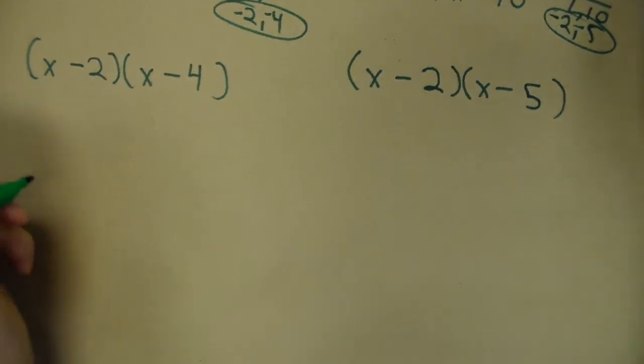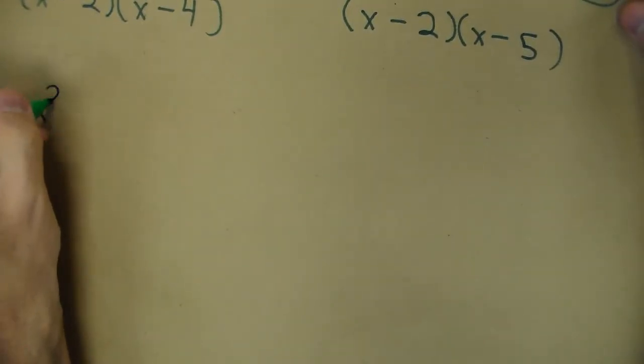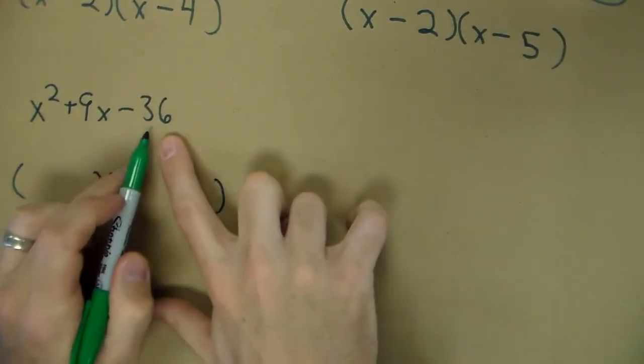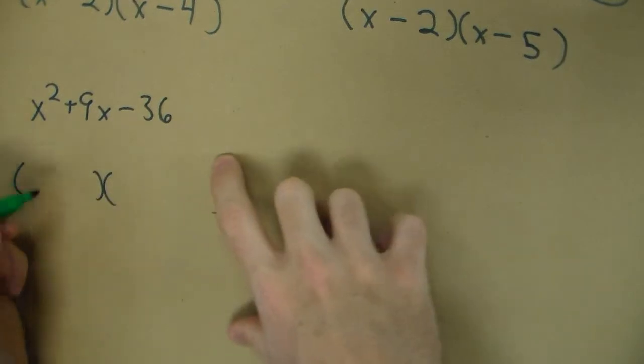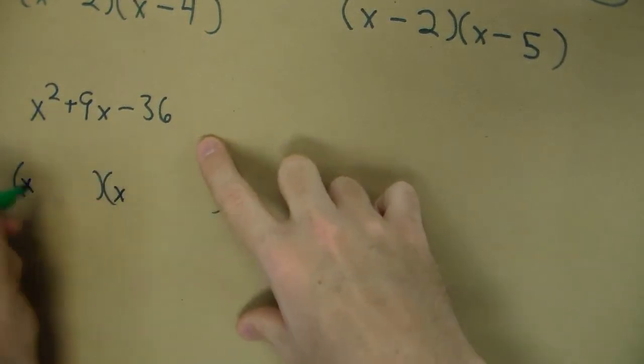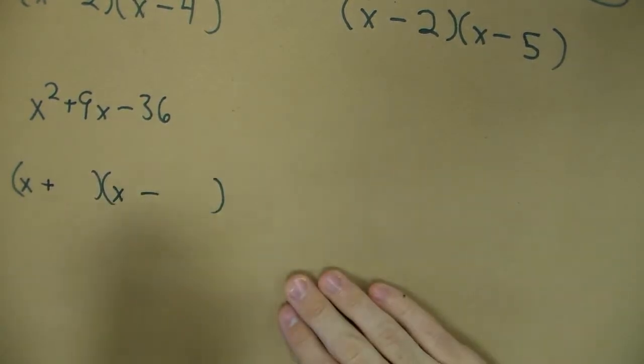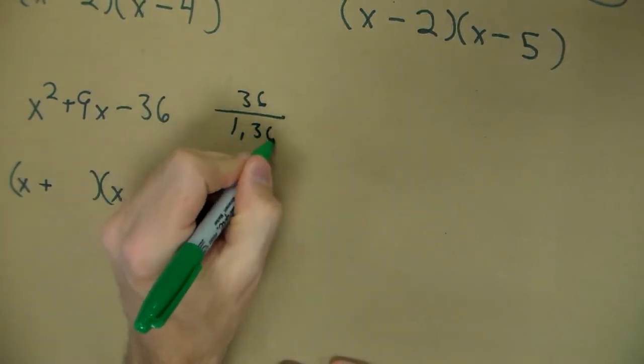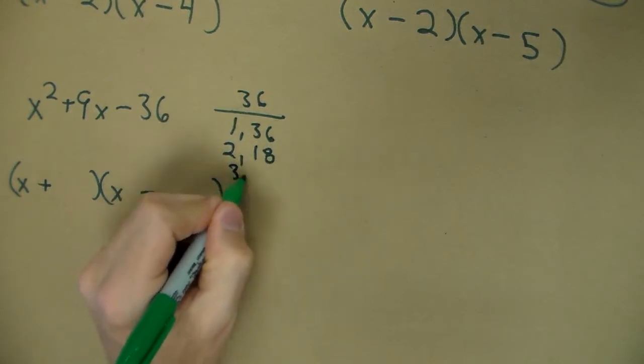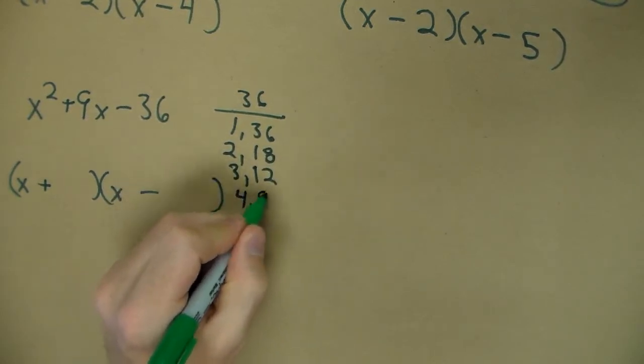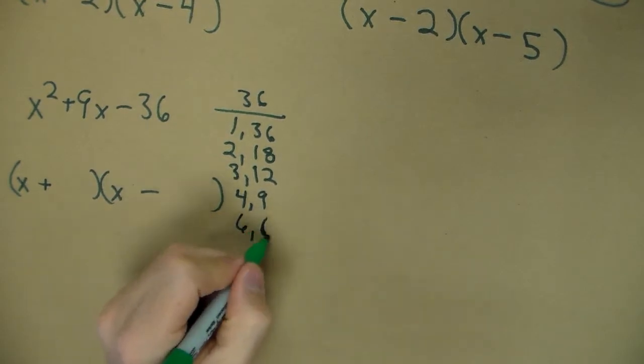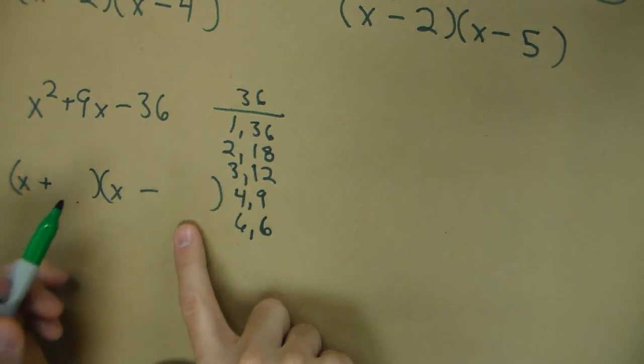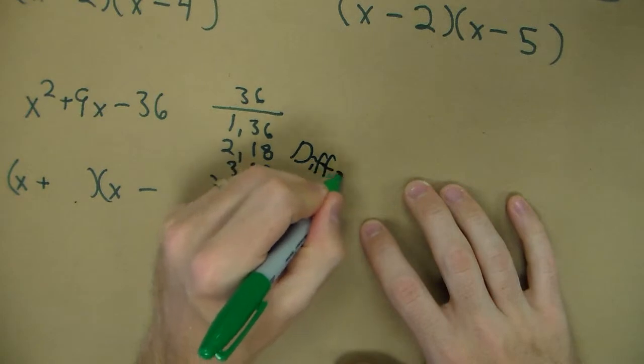Now we can have negatives in different places. What if we went x² + 9x - 36? How can I get a negative 36 but add to 9? Well, the only way you can multiply to get a negative is to have one positive, one negative. But the important part is which one is positive, which one is negative. So for 36 our factors are 1 and 36, 2 and 18, 3 and 12, 4 and 9, 6 and 6. We need to find where one's positive, one's negative, and we get a 9. So what this really means is we're looking for one that has a difference of 9. Well, 3 and 12 are 9 apart.